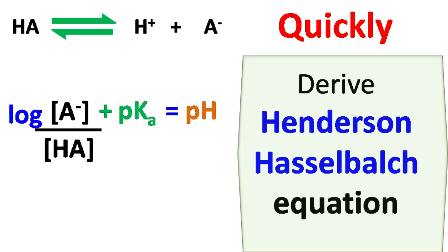Hey everyone, Quick Biochemistry Basics here. Let's talk about Henderson and Hasselbalch equation. Henderson-Hasselbalch equation is used to calculate pH of solutions with known amount of acid and conjugate base.